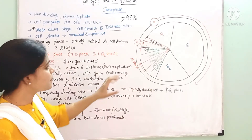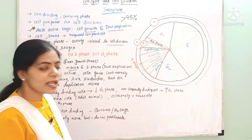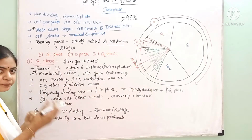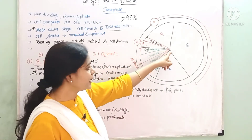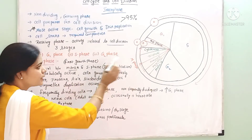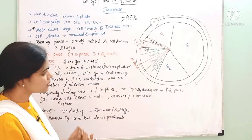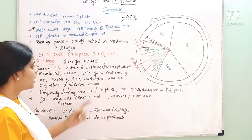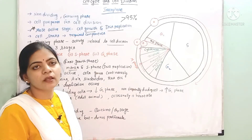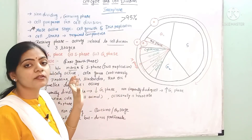G1 phase is metabolically active. The cell is very active during G1 phase, with cell size and cell growth increasing. S phase is where DNA replication occurs. During G1 phase, components needed for DNA replication are prepared — ATP, proteins, amino acids, RNA, and nucleotides. Nucleotides are the main structural components of DNA, consisting of a phosphate group and sugar.